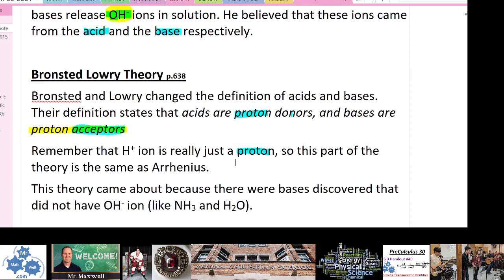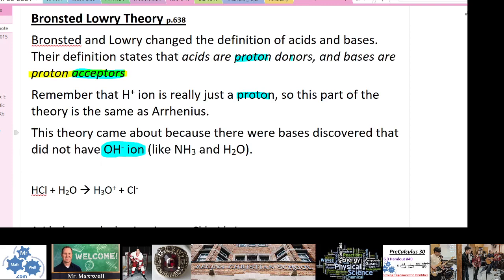This updated theory came about because bases were discovered that did not have the OH minus ion. NH3 — ammonia — is the obvious example. There's no oxygen in NH3, so according to Arrhenius it shouldn't be a base, yet it produces a basic solution. This was the problem that required a new model.